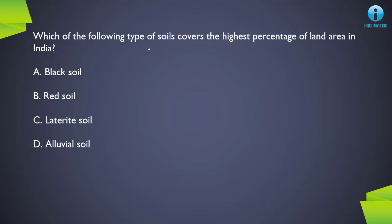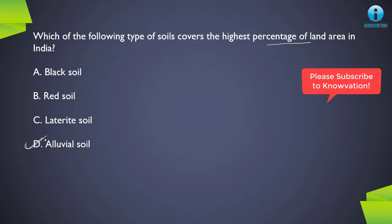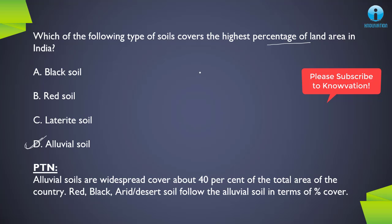Next question: which type of soil covers the highest percentage of land area in India? The correct answer is D, Alluvial soil. Almost 40% of the total area of our country is covered by alluvial soil. After alluvial soil, red soil, black soil, and arid or desert soil follow in terms of percentage coverage. So the order is: alluvial soil first, then black soil, then arid or desert soil.